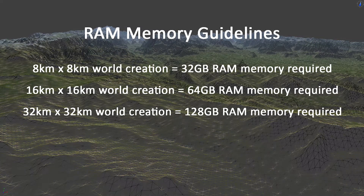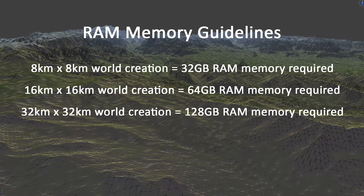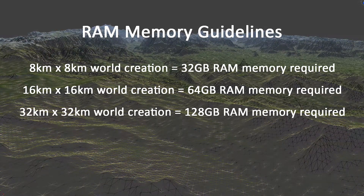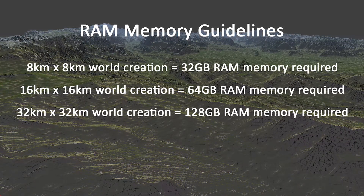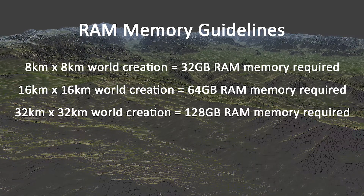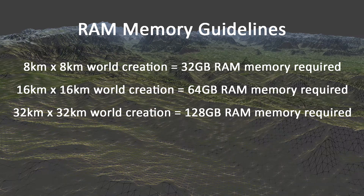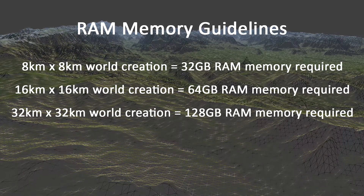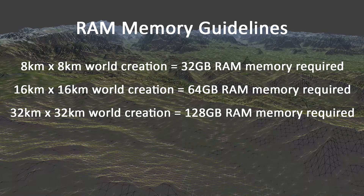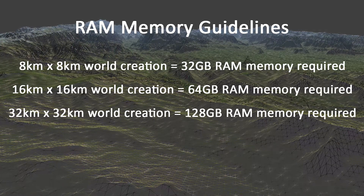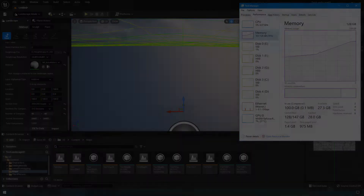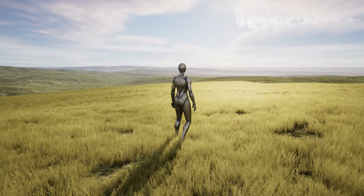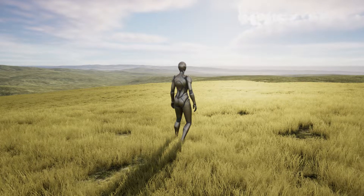The basic guideline for RAM memory requirements for importing and creating large worlds follows this rule: 8km by 8km world creation requires 32GB of RAM; 16km by 16km requires 64GB of RAM; and 32km by 32km requires 128GB of RAM. The larger amount of memory is required during height map importing and landscape streaming proxy texture creation. This specified amount of memory also includes headroom for editing the world — to be able to add foliage and meshes.